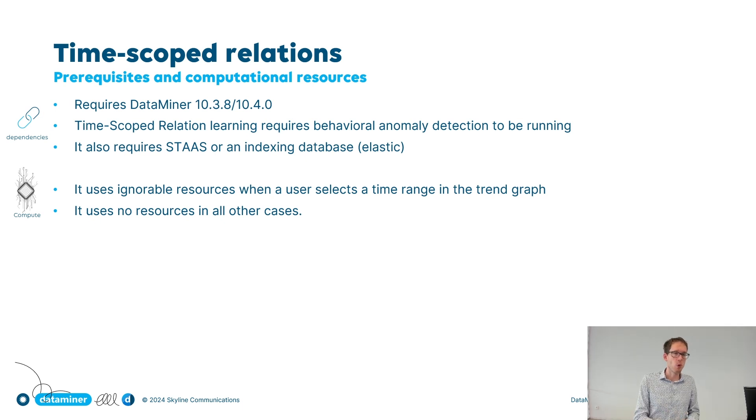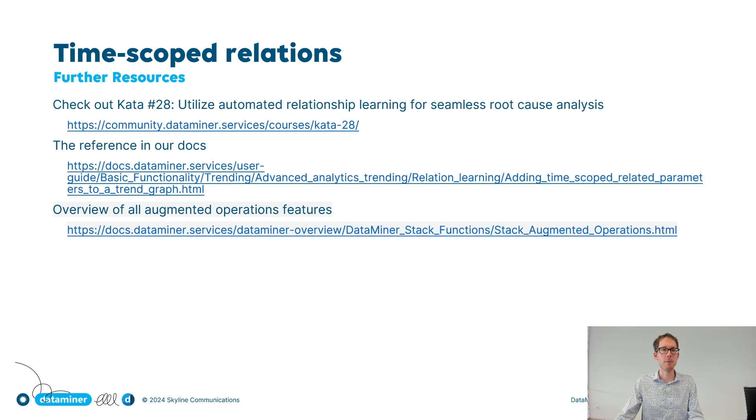What about resources? Well, don't worry. They are completely ignorable. Actually, nothing is done unless a user selects a part of a trend graph. And then we just fetch the change points, but we restrict it on change points on the same element. And also CPU wise, there's really not that much that needs to be done. So no need to worry about that. If you like this feature, definitely check out some further resources. In the kata we also give the demo that we did here. And you can find more references in the docs as mentioned here.